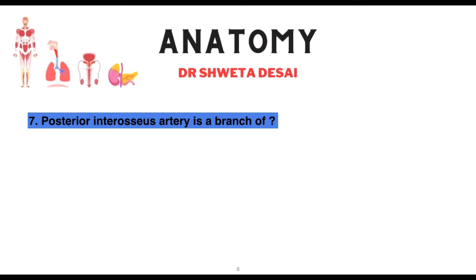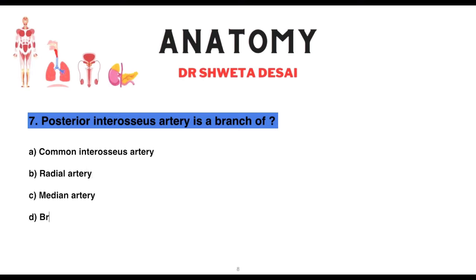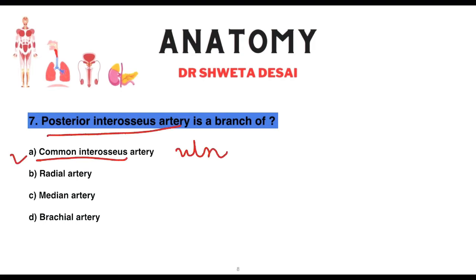The posterior interosseous artery is a branch of which artery: common interosseous artery, radial artery, median artery, or brachial artery? The posterior interosseous artery is a branch of the common interosseous artery, which is itself a branch of the ulnar artery.